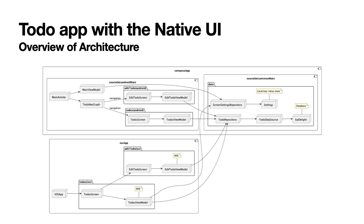Within the Compose app, there are three source sets: Common main, Android main, and iOS main. And in the diagram, iOS main is omitted.